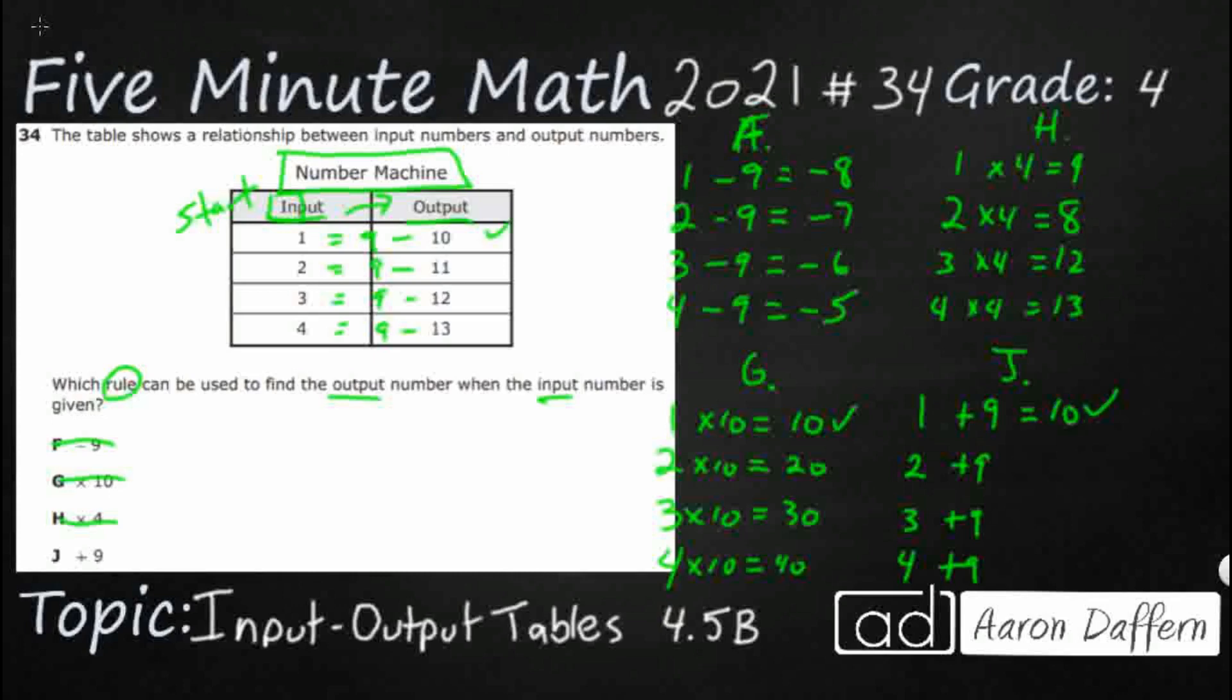2 plus 9, 11. Yes, that's good. 3 plus 9, 12. That's good. And then, yep, we've got our 13 as our 4 plus 9. That is good. So you notice we've got a plus 9 here. We noticed when we did this F, this minus 9, that we were kind of close if they would have just flipped that.